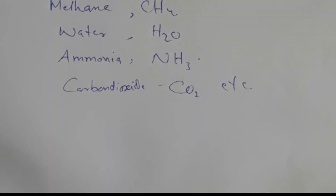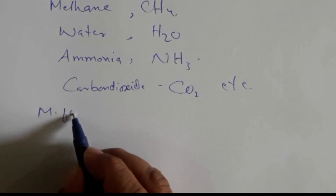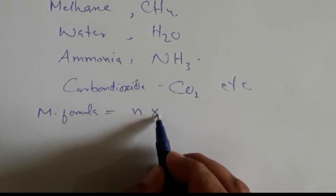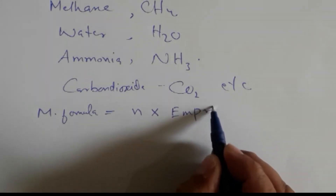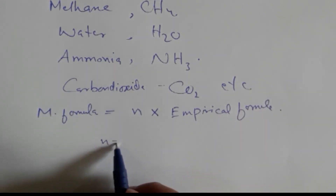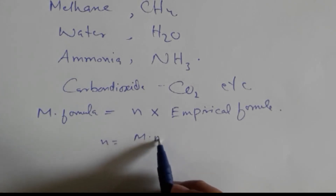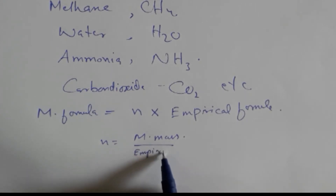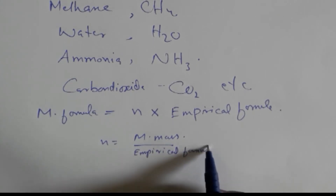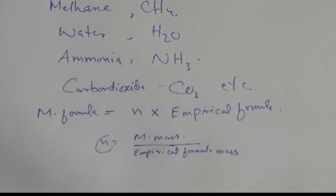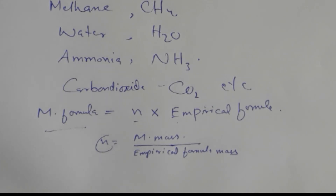Molecular formula is a simple multiple of the empirical formula. The relationship is: Molecular formula = N × Empirical formula, where N is equal to molecular mass divided by empirical formula mass. Once we calculate N, we multiply it with the empirical formula to find the molecular formula.